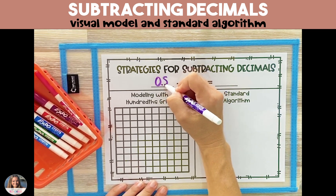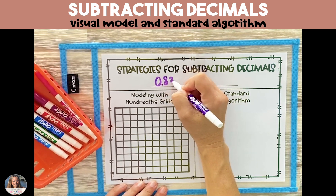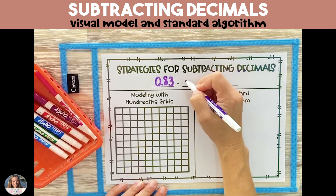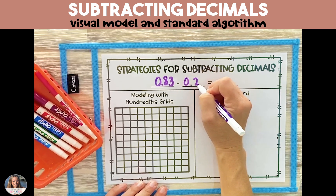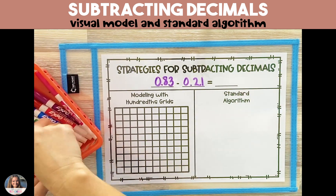Each row and each column are worth 1 tenth of the whole, and each square is worth 1 hundredth of the whole.